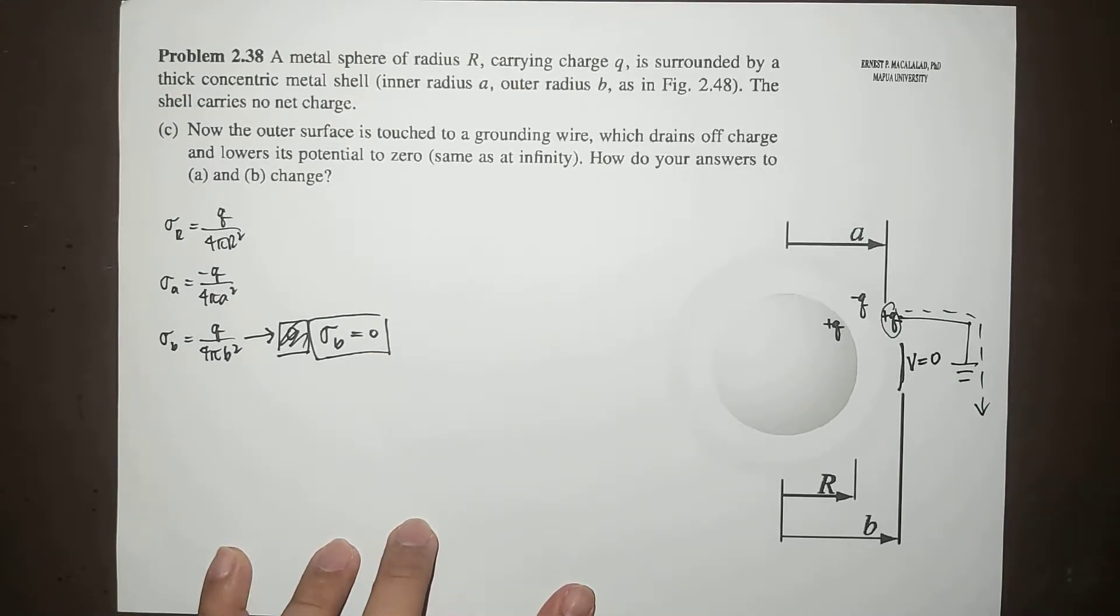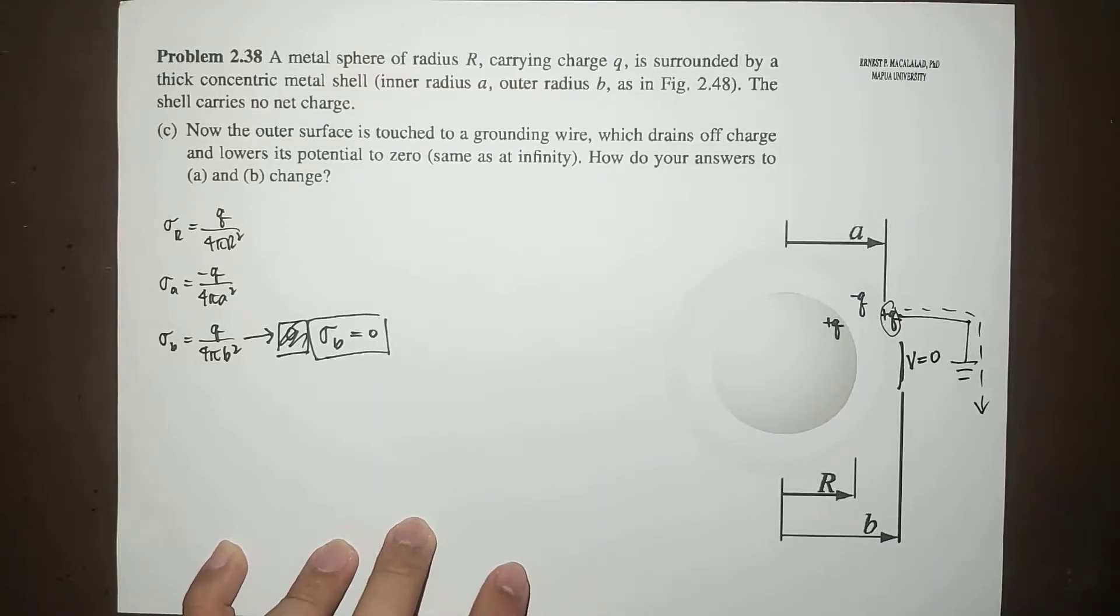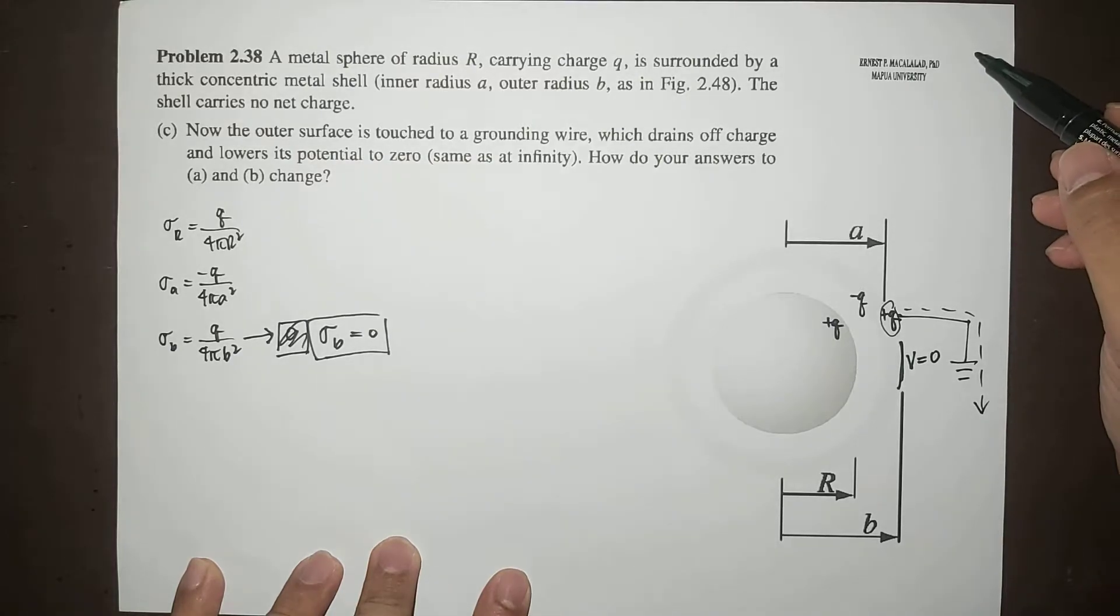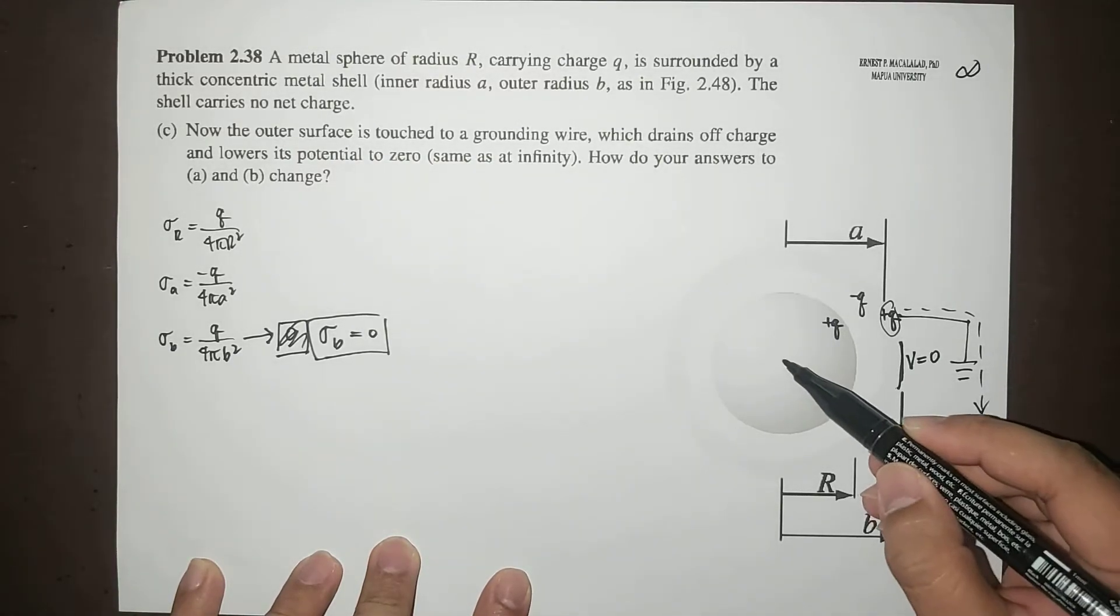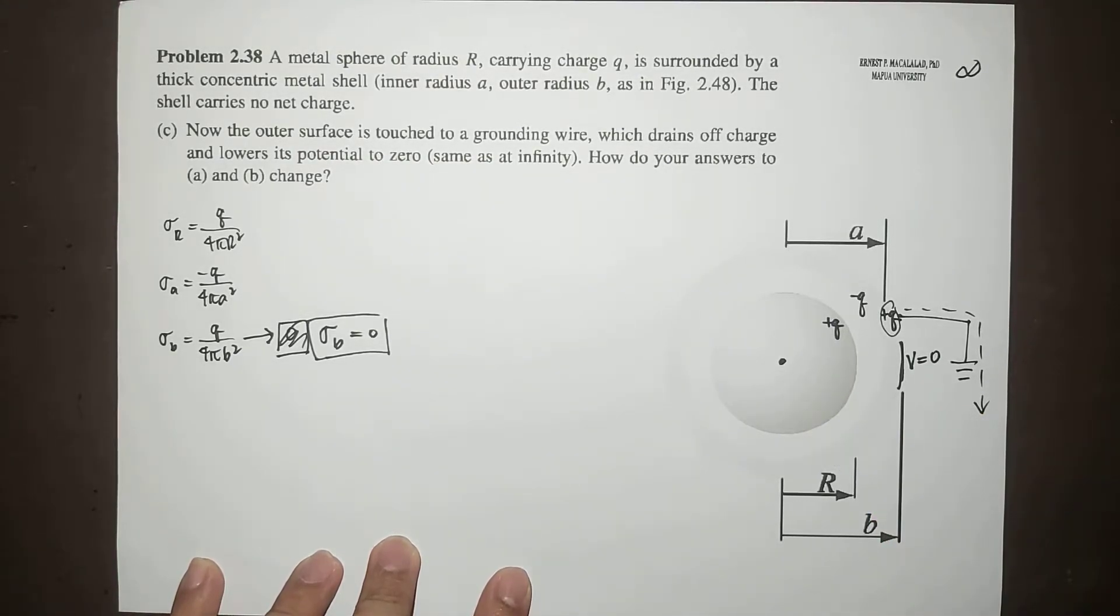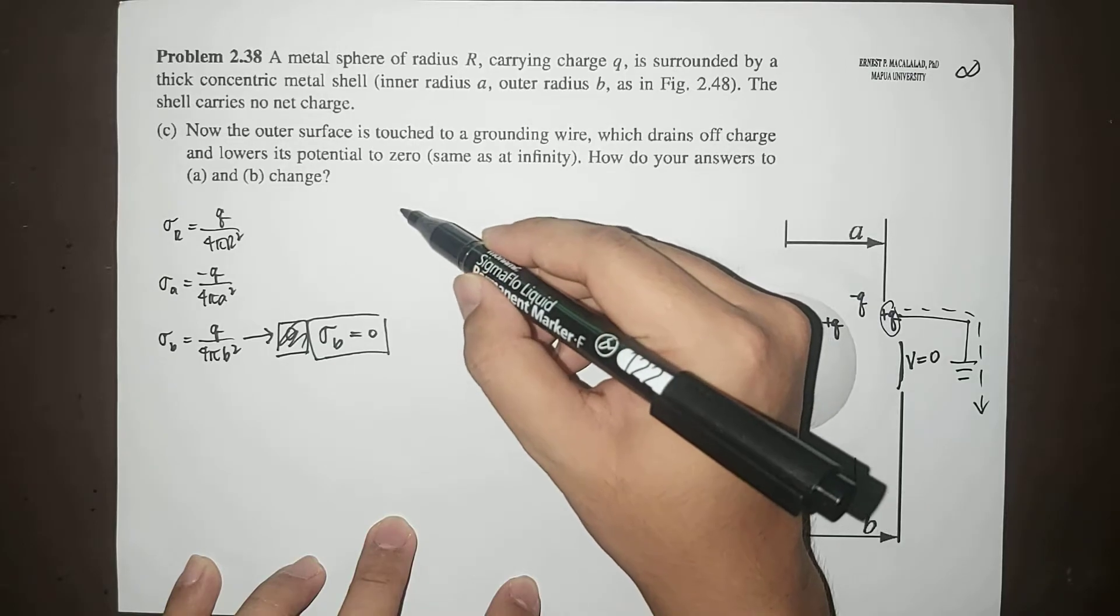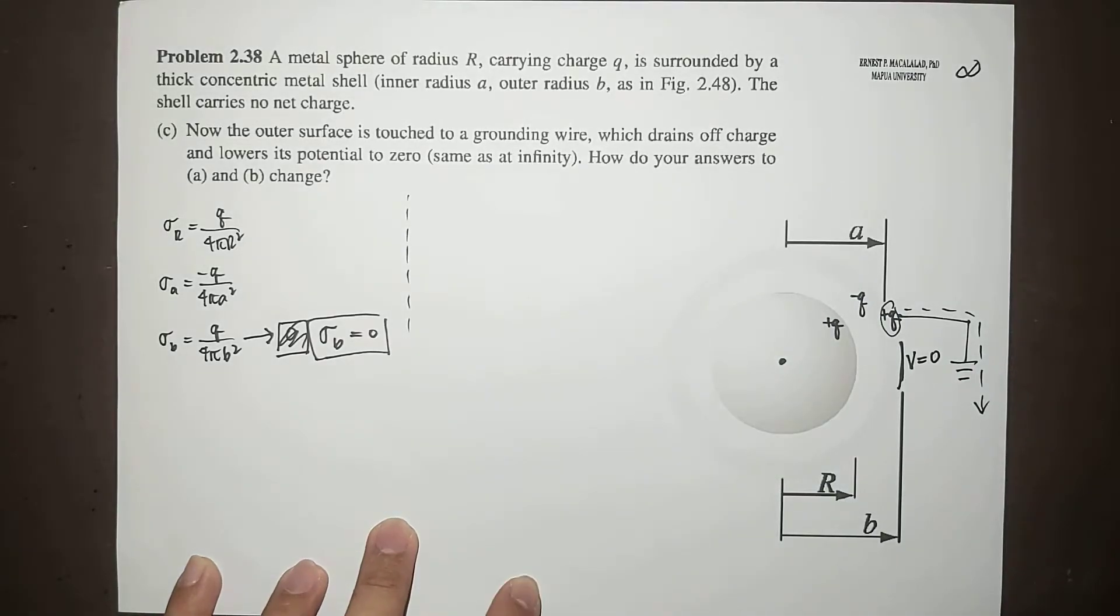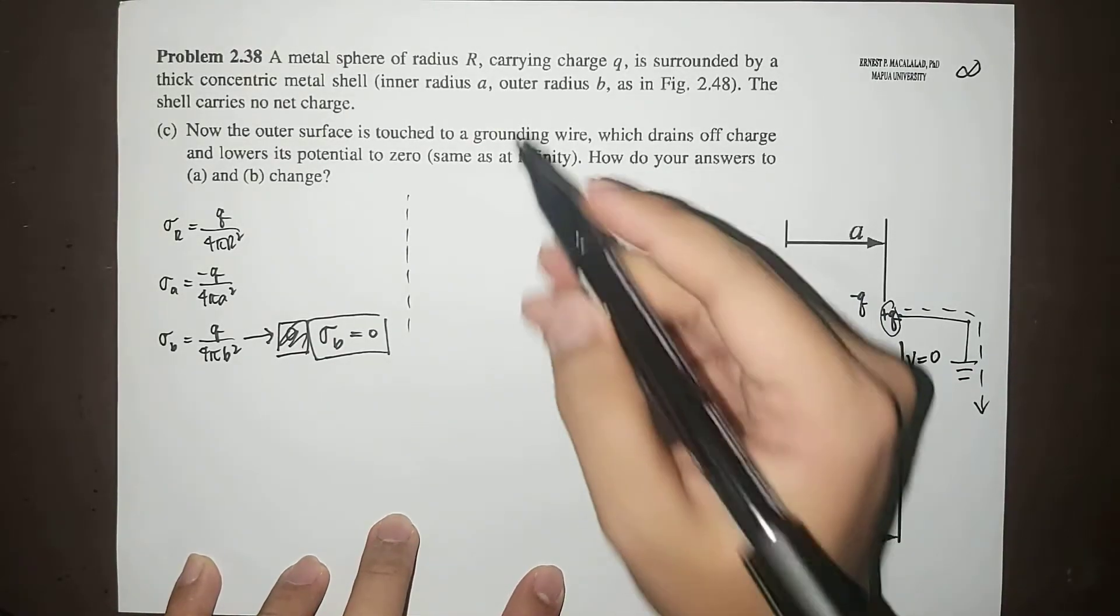charge. So therefore sigma B becomes zero. Okay, now for letter B, we want to calculate the potential